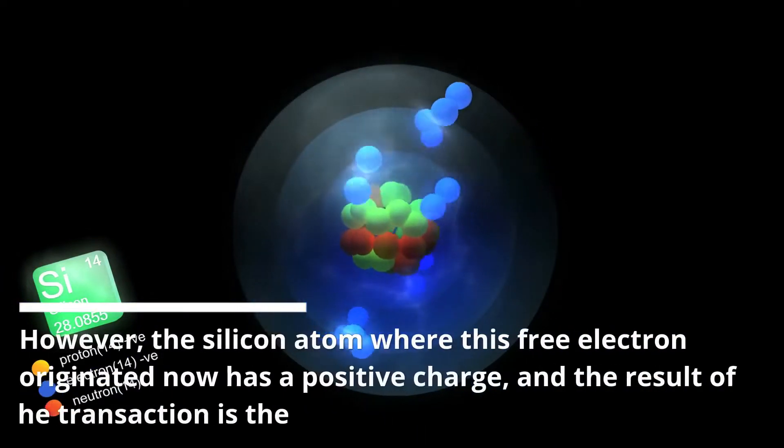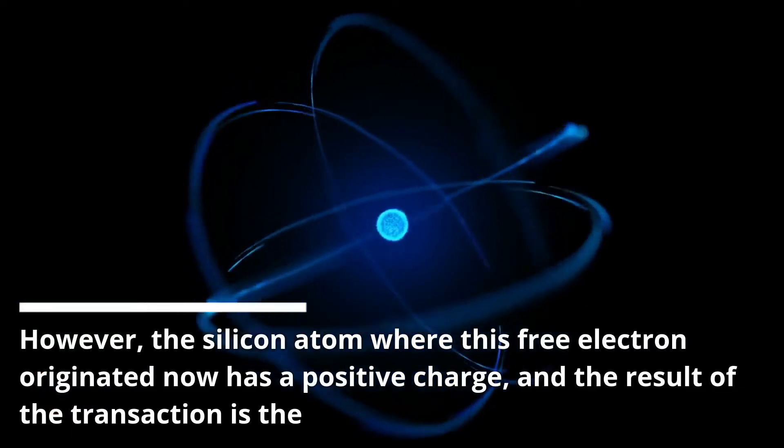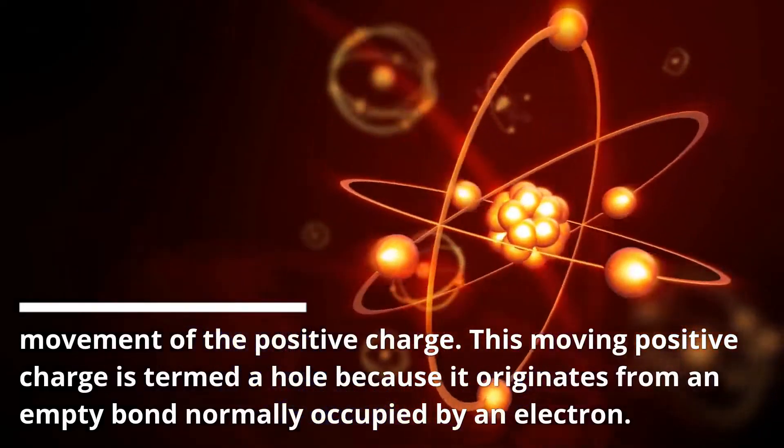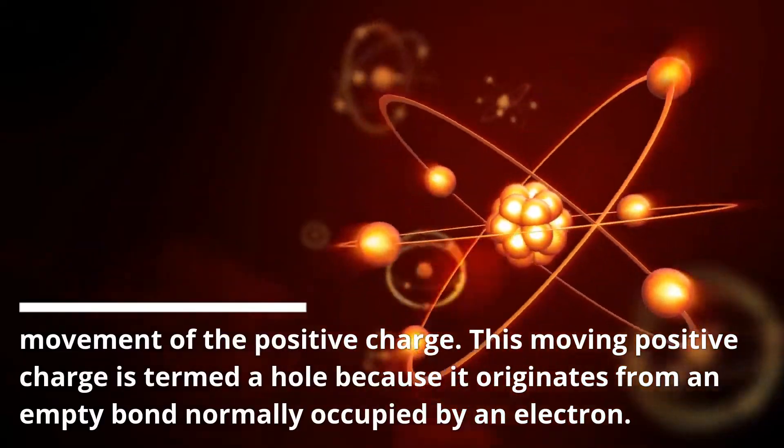However, the silicon atom where this free electron originated now has a positive charge, and the result of the transaction is the movement of the positive charge. This moving positive charge is termed a hole because it originates from an empty bond normally occupied by an electron.